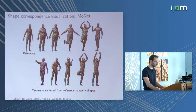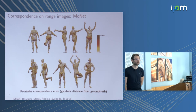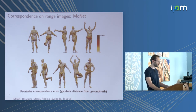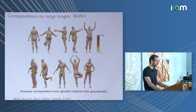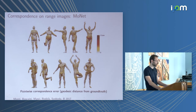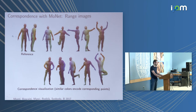In a more challenging setting with topological changes and range maps with missing parts and connectivity changes, the results remain pretty good — color coding confirms very good correspondence despite partial inputs.